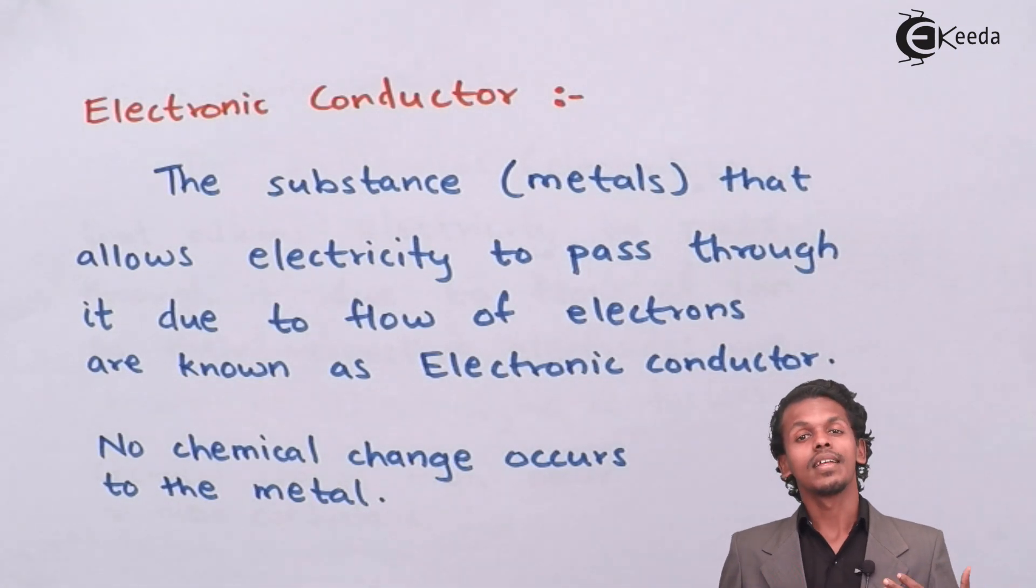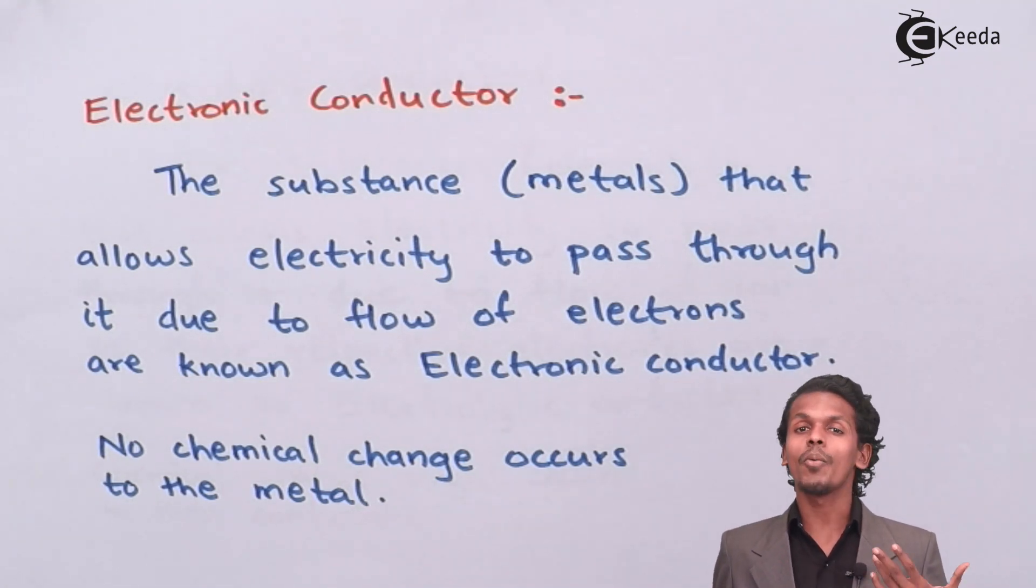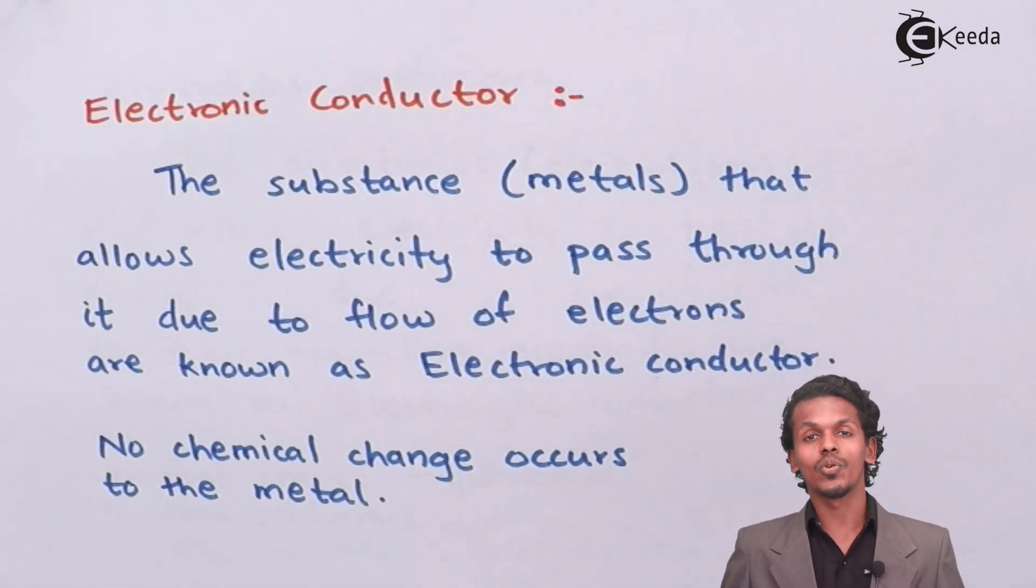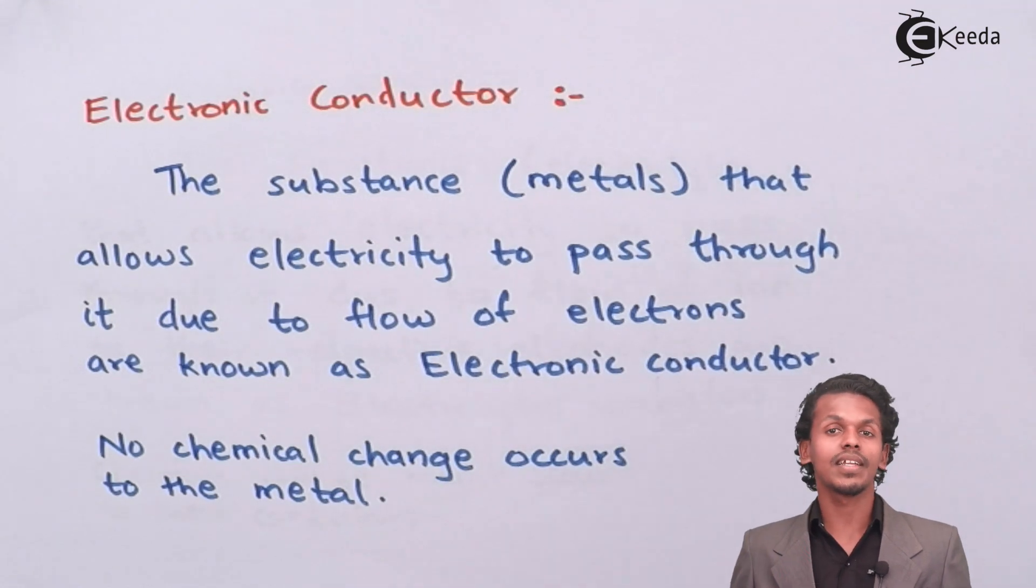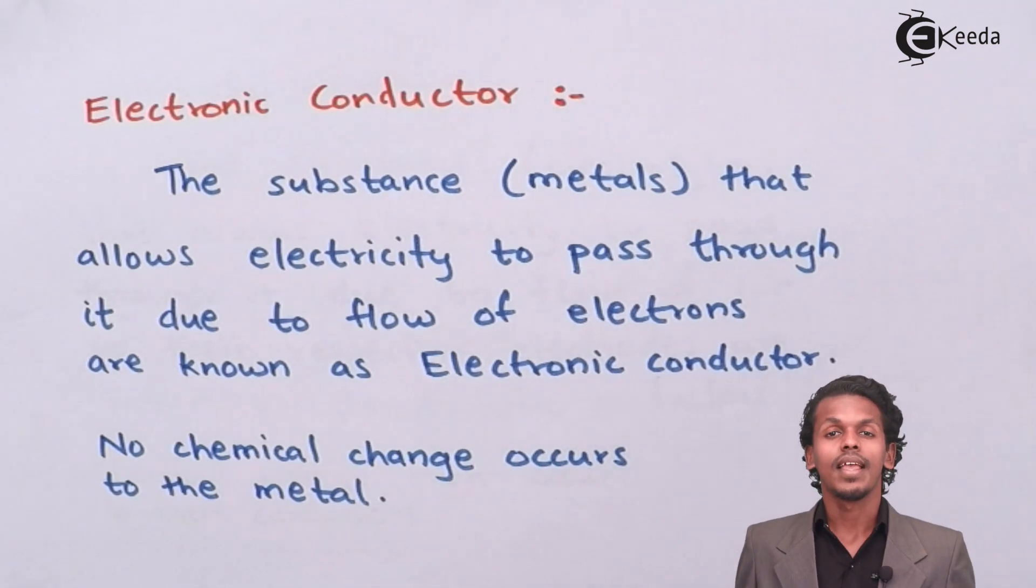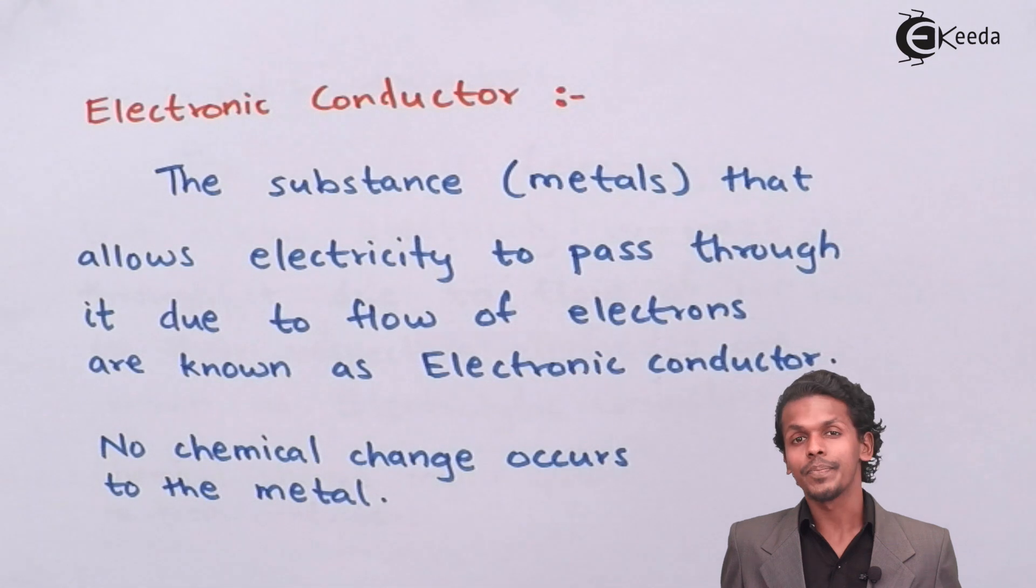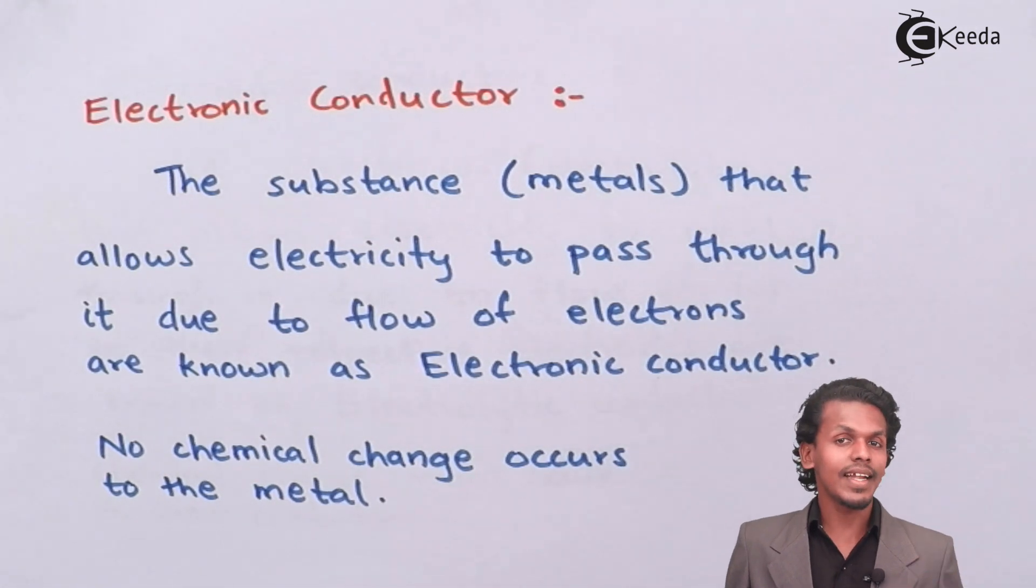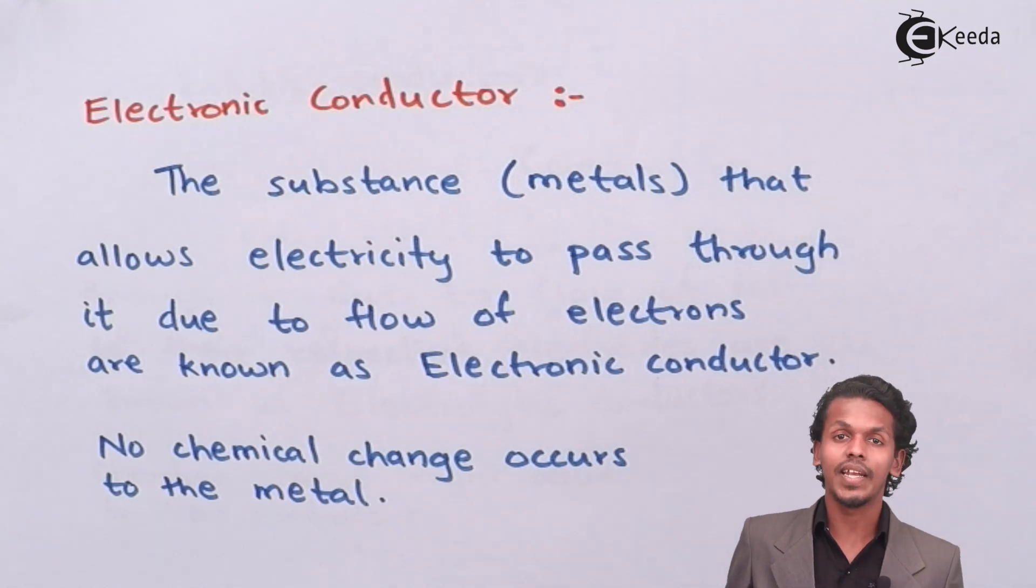For example, when electricity is passed through copper, then copper is not oxidized or reduced. It remains as copper as it is unless it is dipped in an electrolytic solution or mixed with an electrolytic conductor. So in that case the metal doesn't change because of electricity.